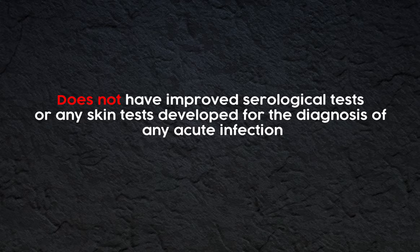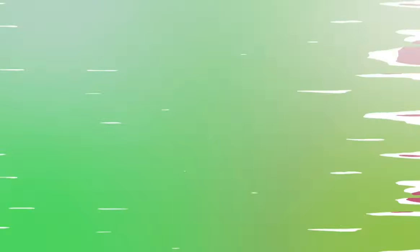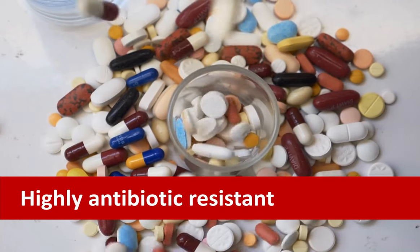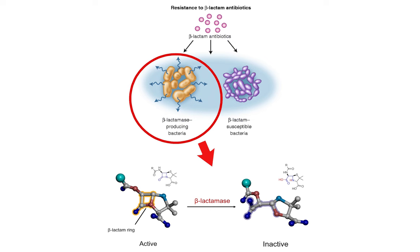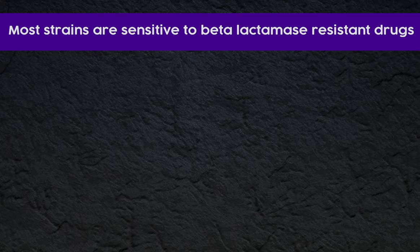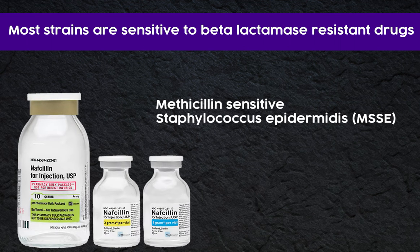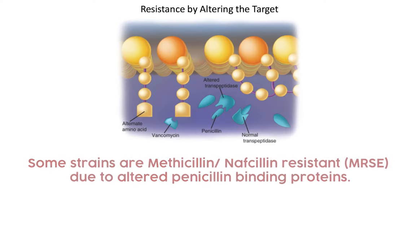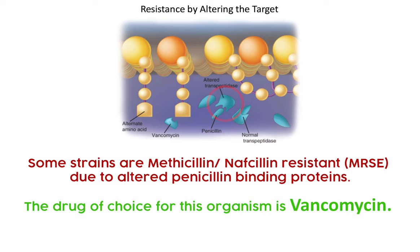Treatment: S. epidermidis is highly antibiotic resistant and most strains produce beta-lactamase. However, most strains are sensitive to beta-lactamase resistant drugs such as nafcillin. These strains are called methicillin sensitive Staphylococcus epidermidis (MSSE). Some strains are methicillin or nafcillin resistant (MRSE) due to altered penicillin binding proteins.